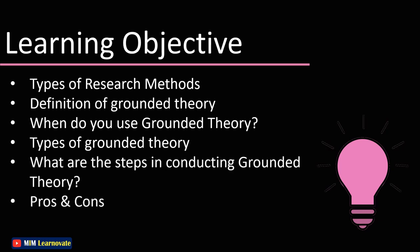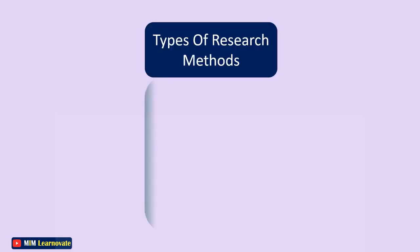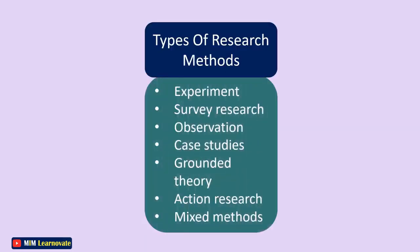Pros and Cons of using Grounded Theory. There are seven basic types of research methods: Experiment, Survey Research, Observation, Case Studies, Grounded Theory,